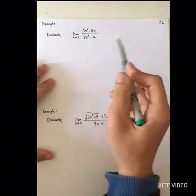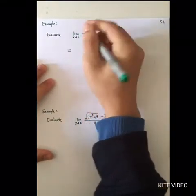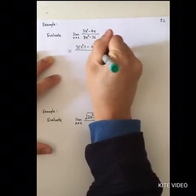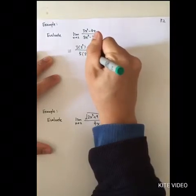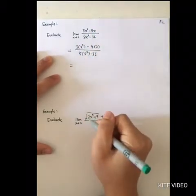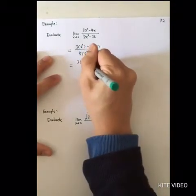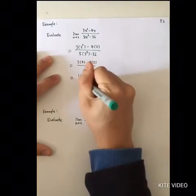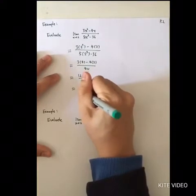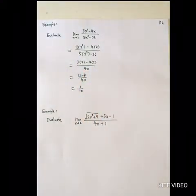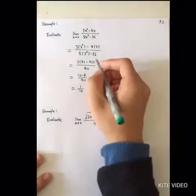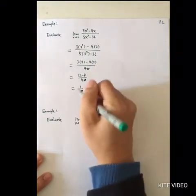Therefore, it is perfectly fine to apply direct substitution. It becomes 3 times 2 squared minus 4 times 2, divided by 5 times 2 to the power 3 minus 36. By direct substitution you get 3 times 4 minus 4 times 2, divided by 40, which equals 12 minus 8 over 40. Note: the denominator should actually be 4, so the final answer is 1.